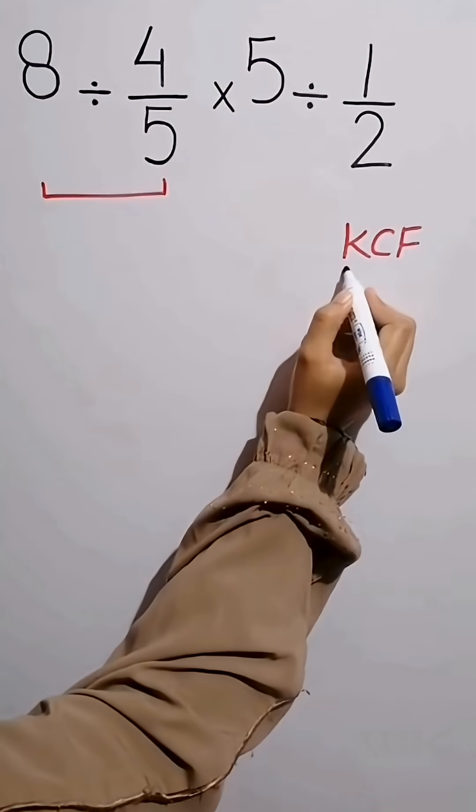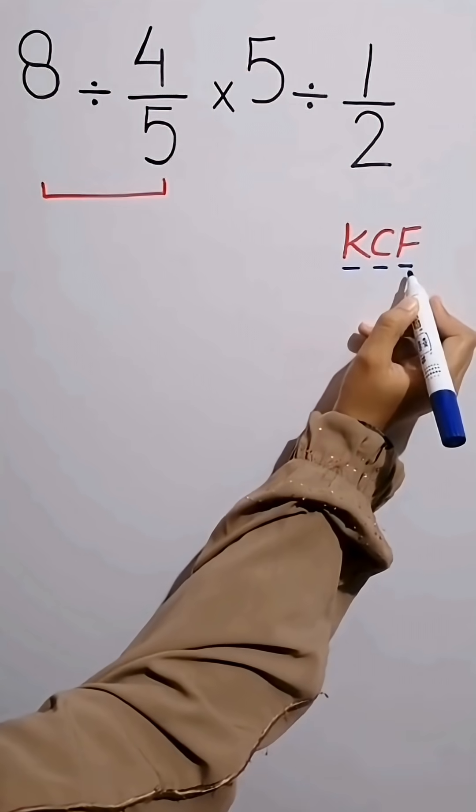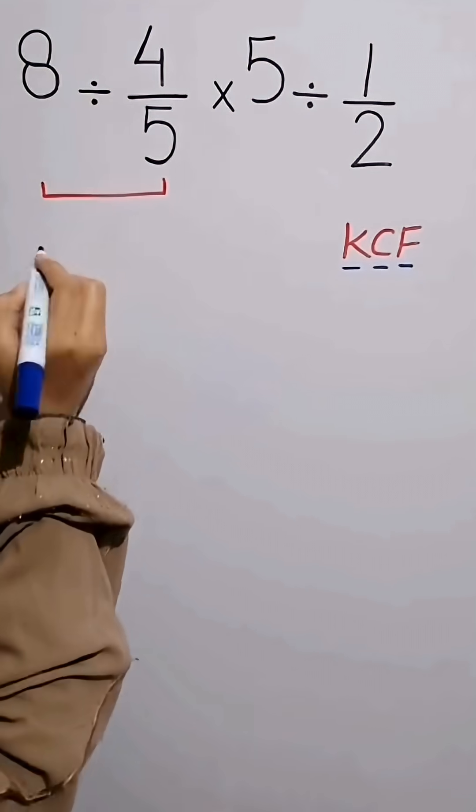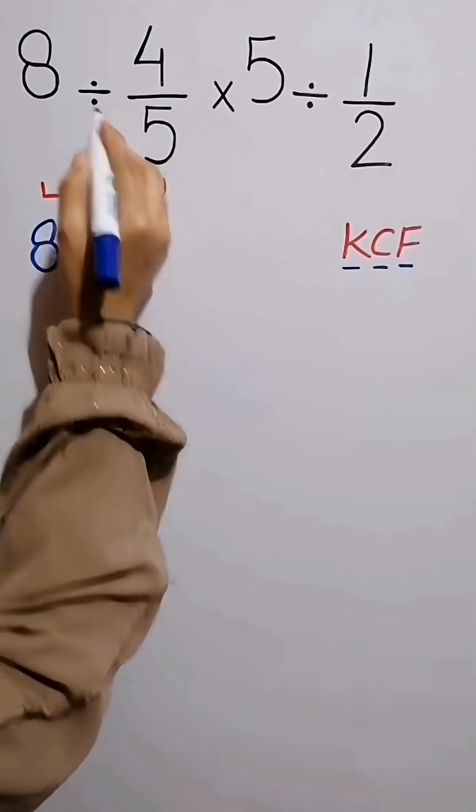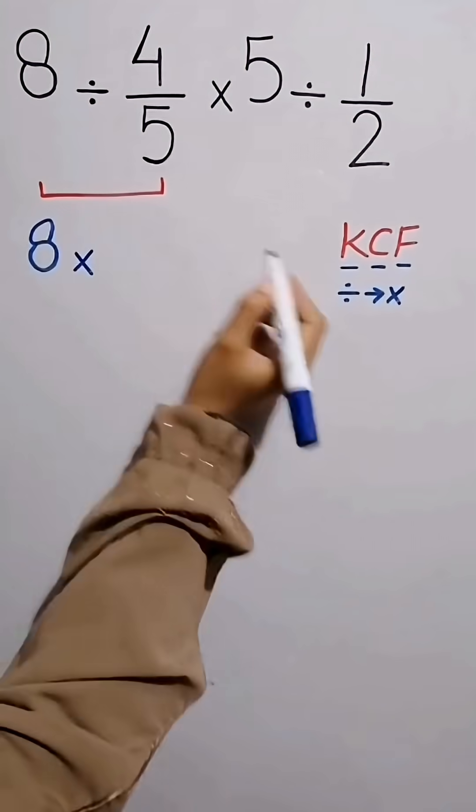K stands for keep, C stands for change, F stands for flip. Now according to KCF rule, keep the first fraction as it is, change division into multiplication and flip the second fraction.